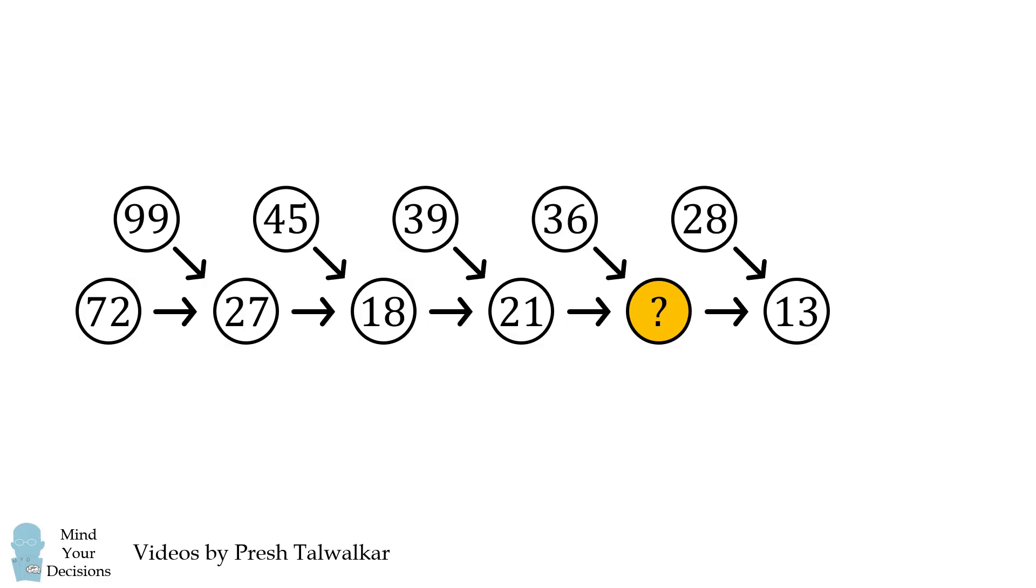28 and the mystery number combine to be 13. And 21 and 13 combine to be 7. What is the rule to combine numbers, and what is the value of the missing number?